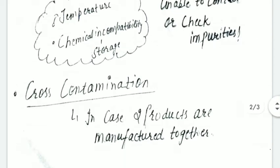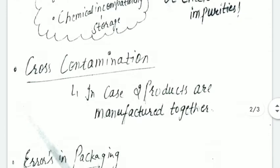Another source is cross-contamination. If you're making only one product like paracetamol tablets, that's fine. But if you're making two products in the same facility, there are chances of cross-contamination where one product can contaminate the other.